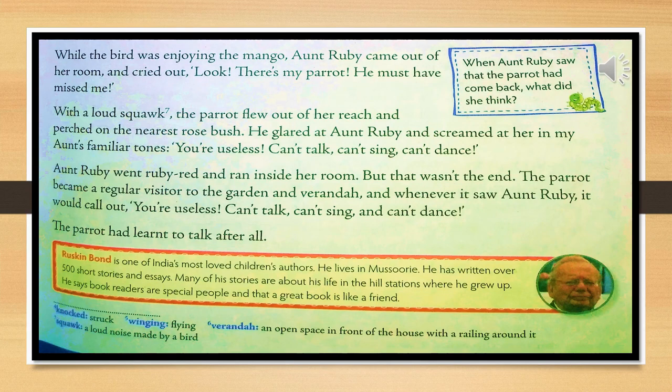While the bird was enjoying the mango, Aunt Ruby came out of her room and cried out, 'Look, there is my parrot. He must have missed me.' With a loud squeak, the parrot flew out of her reach and perched on the nearest rosebush. 'Squeak' means a loud noise made by a bird.